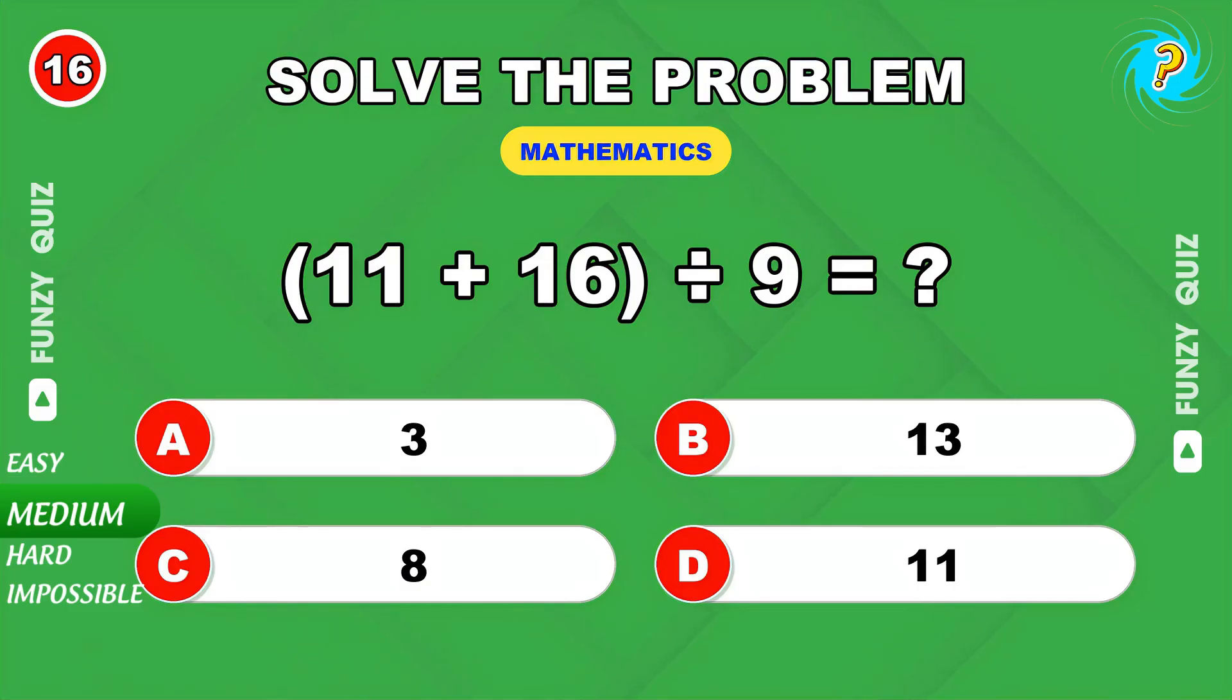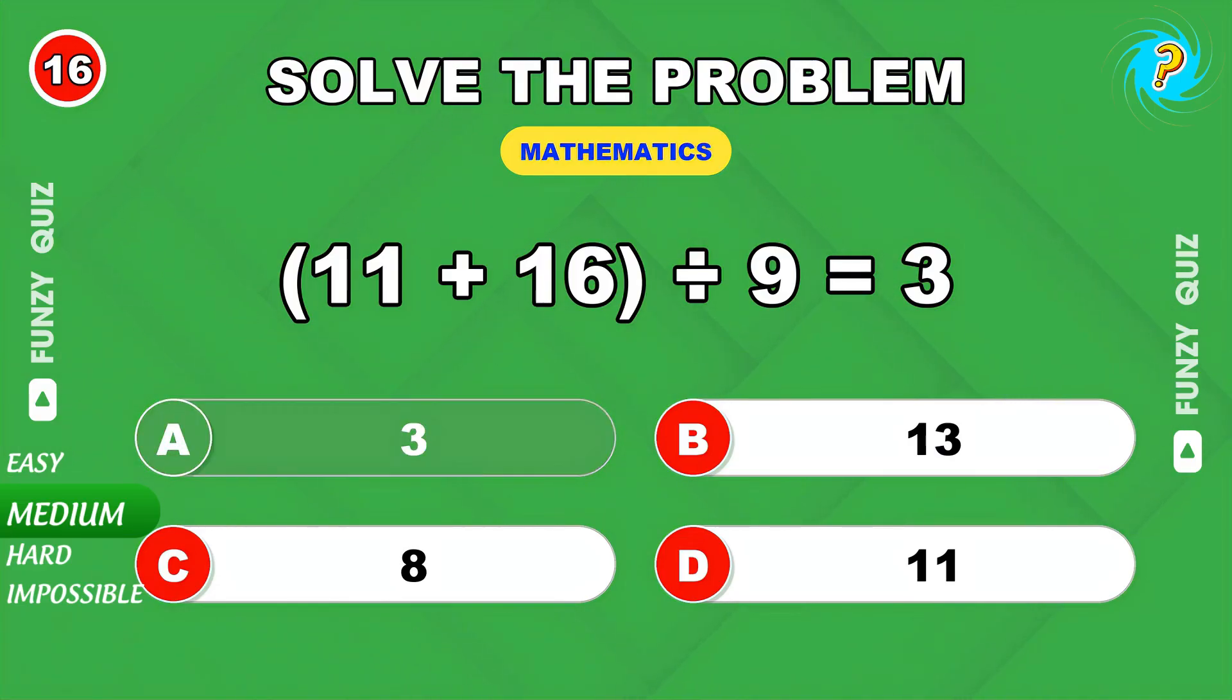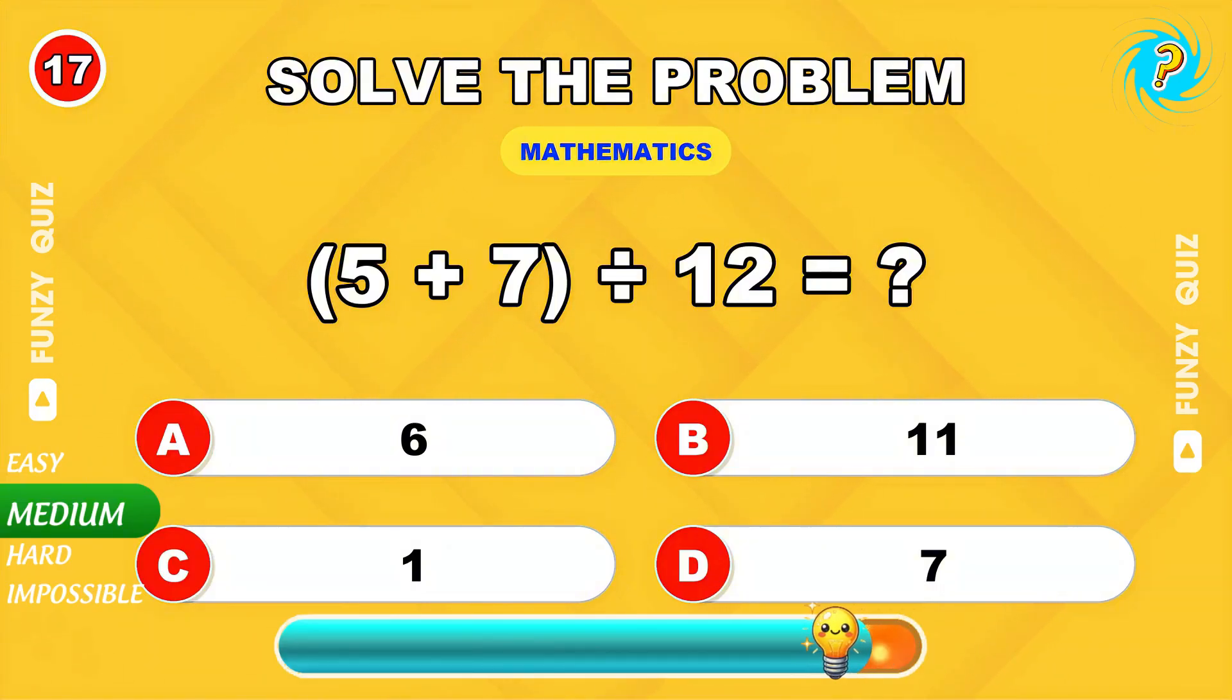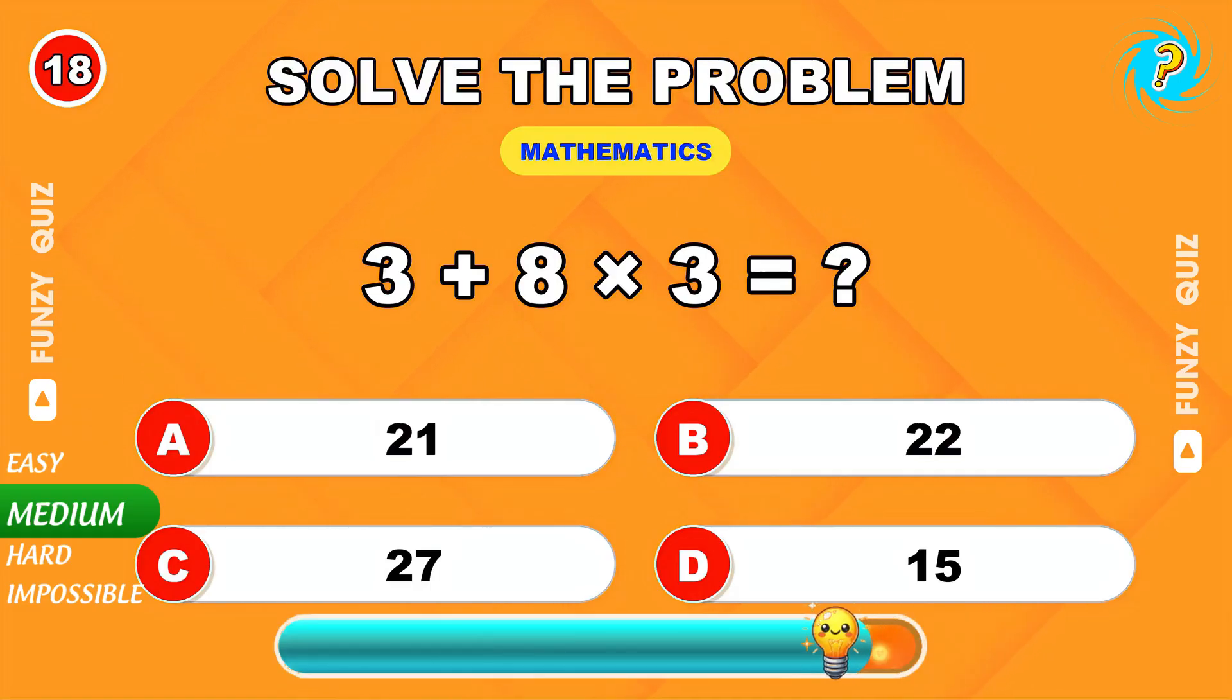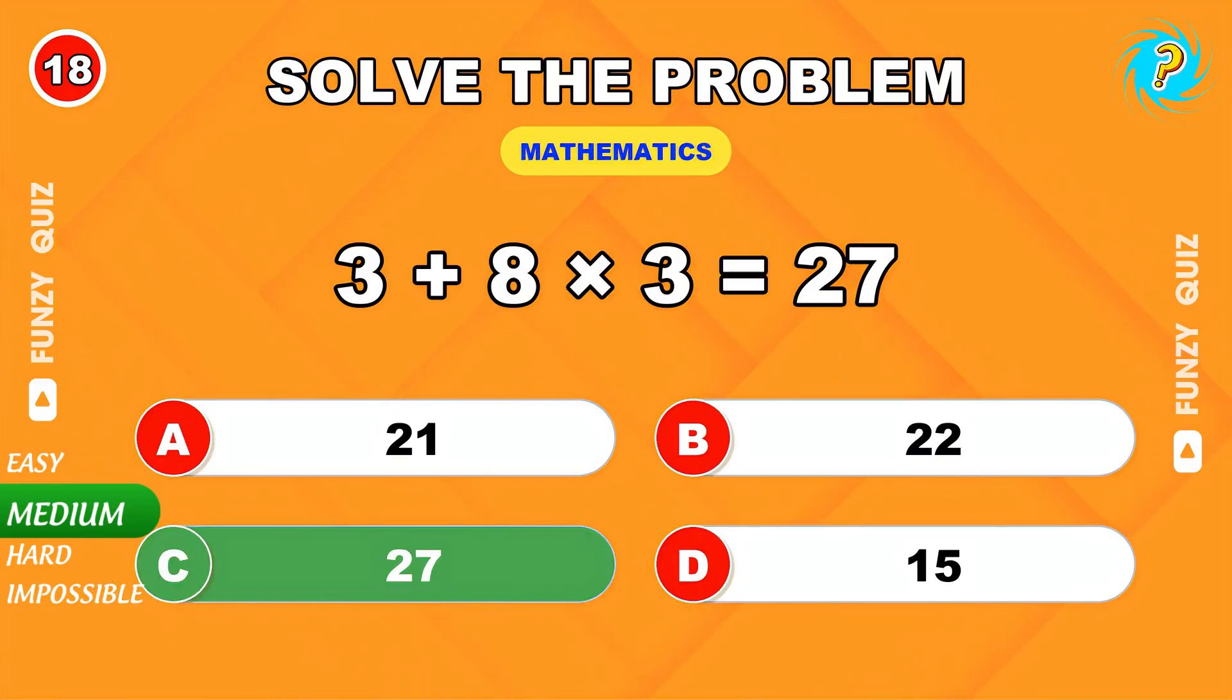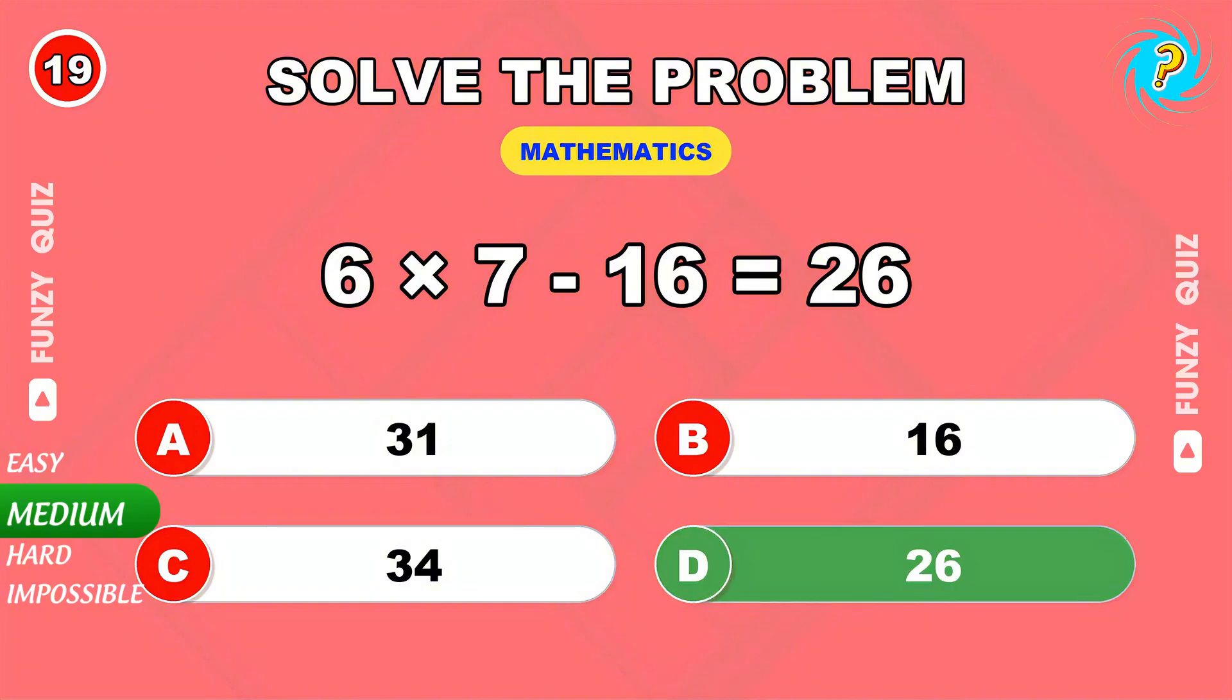11 plus 16 all divided by 9. 3. What's 5 plus 7 divided by 12? 1. 3 plus 8 times 3. 27. 6 times 7 minus 16. 26. Great job!